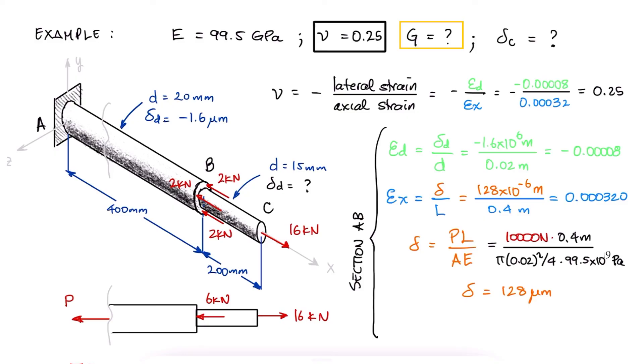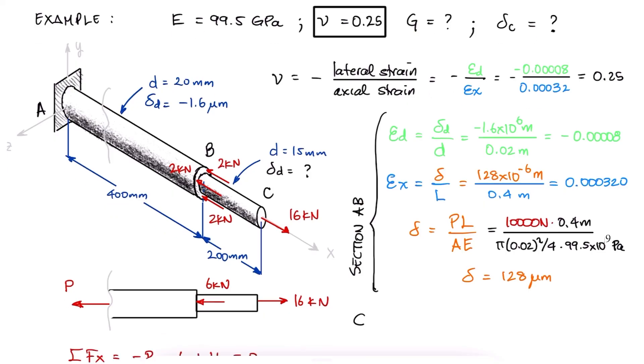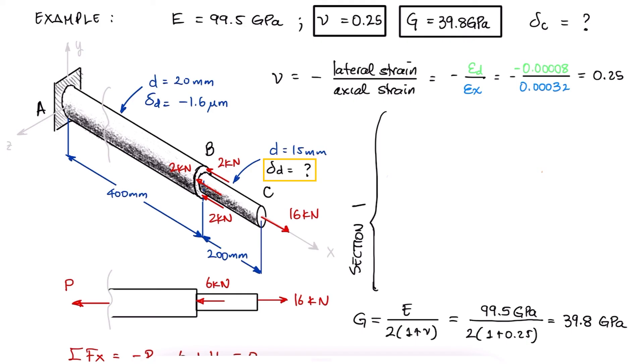For the shear modulus G, we can use the expression we mentioned right before the example, which depends on the Poisson's ratio we just calculated.